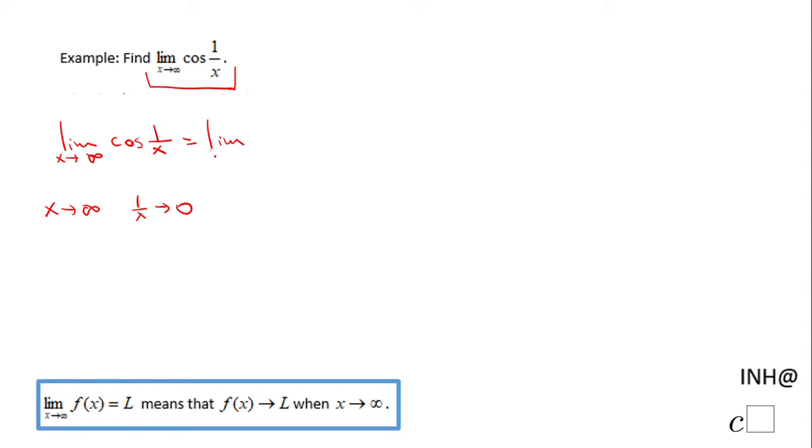Cosine of 0, if we evaluate that, will be nothing else than 1. So the limit as x approaches infinity of cosine of 1 over x will be 1.